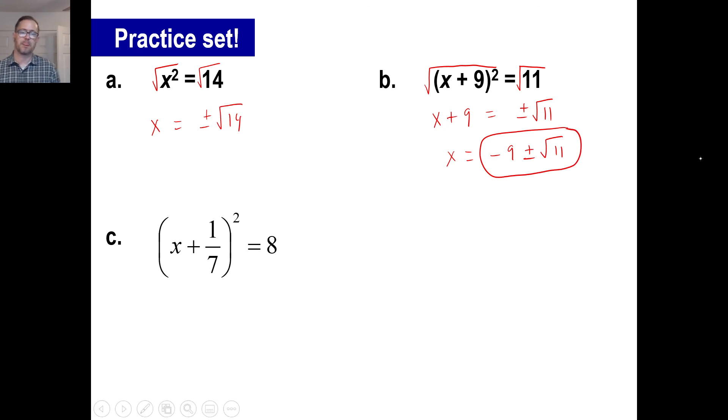Okay, pause it and do c. All right, let's do this mentally. We can go x plus 1 seventh. In other words, we're taking the square root of both sides, equals the square root of 8. Now let's take this over here. The square root of 8 is the same thing as the square root of 4 times 2. This part gets taken out and turns into a 2. That's gone. So your answer becomes this, 2 times the square root of 2.